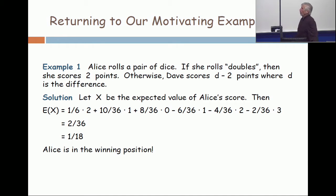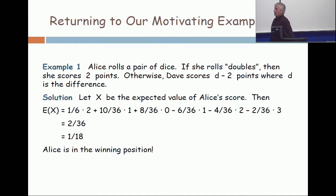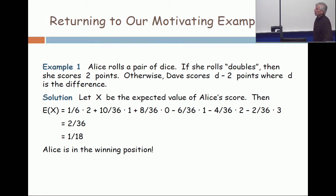So one-sixth of the time, you're going to get a two. Alice's expectation is one-sixth of the time times two. What's the probability of getting a difference of one?